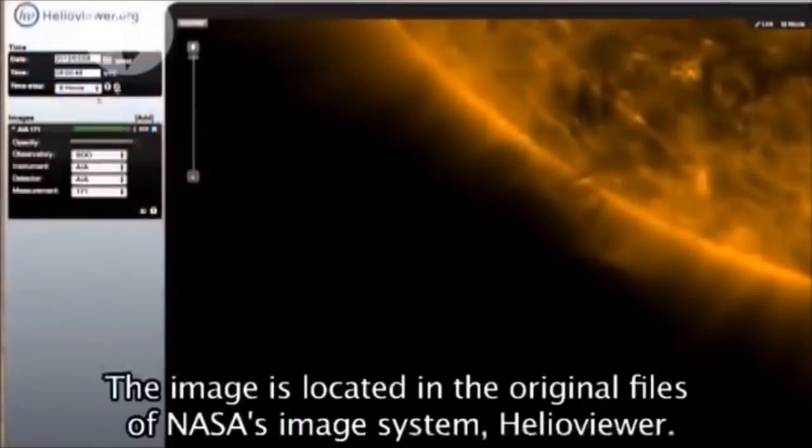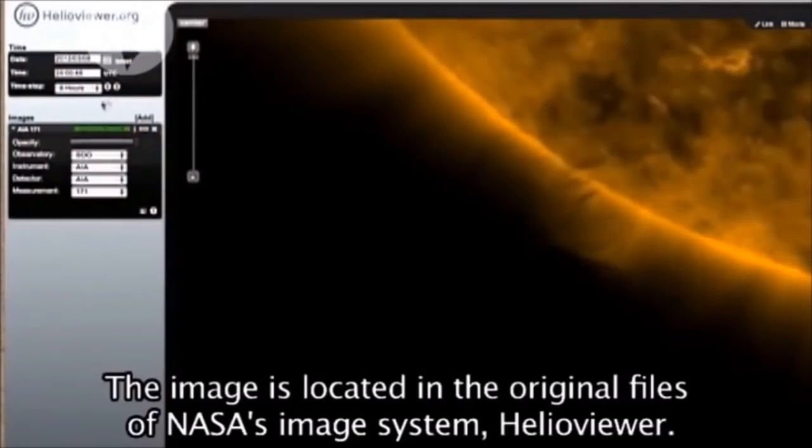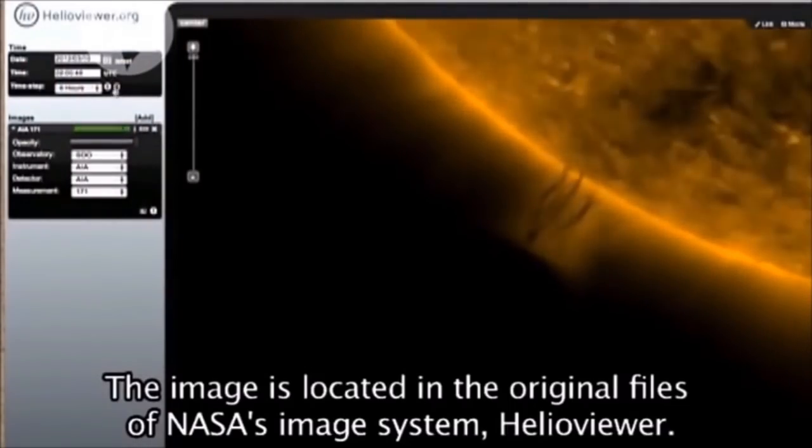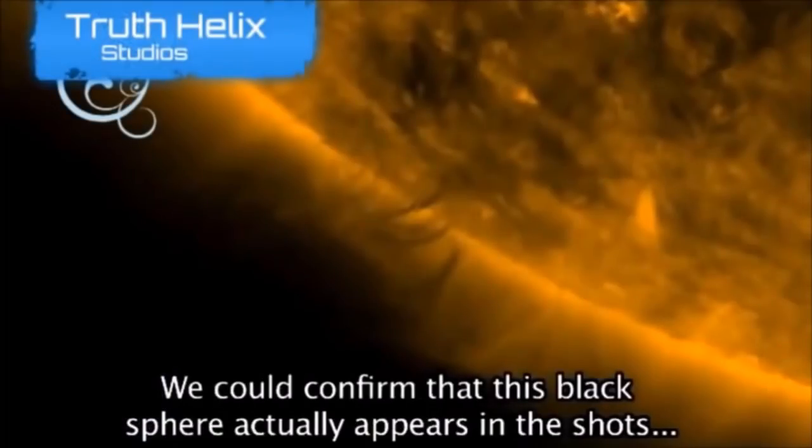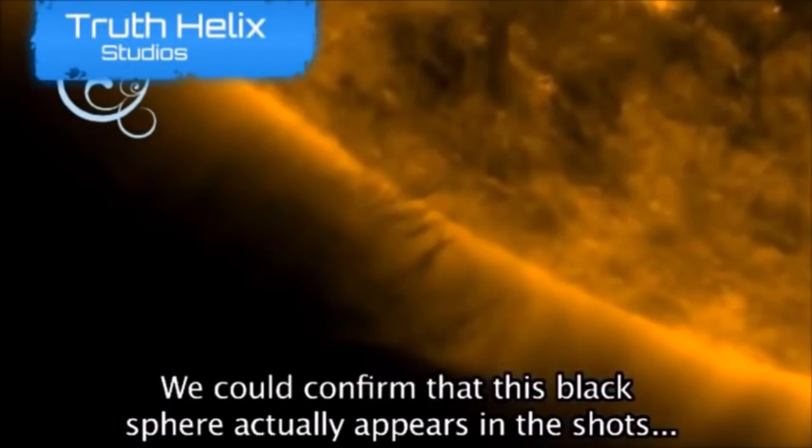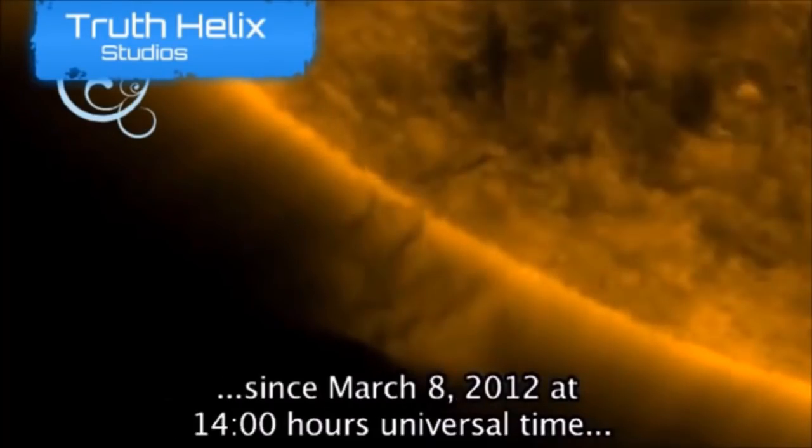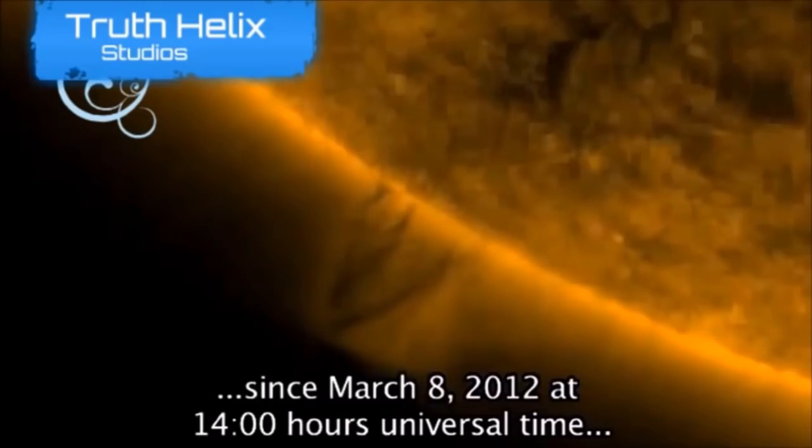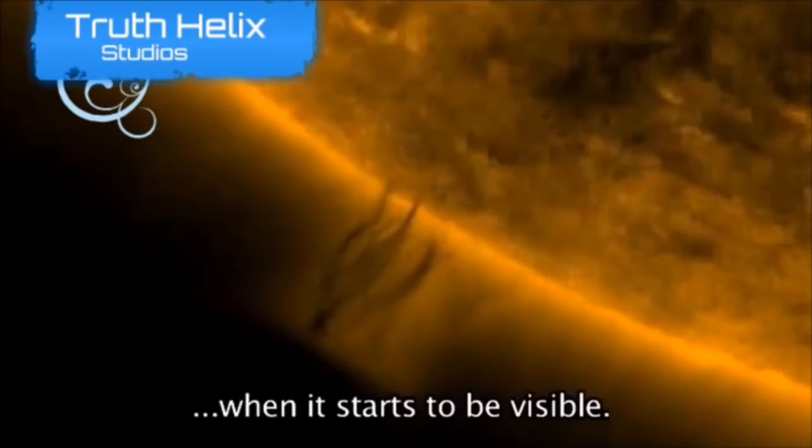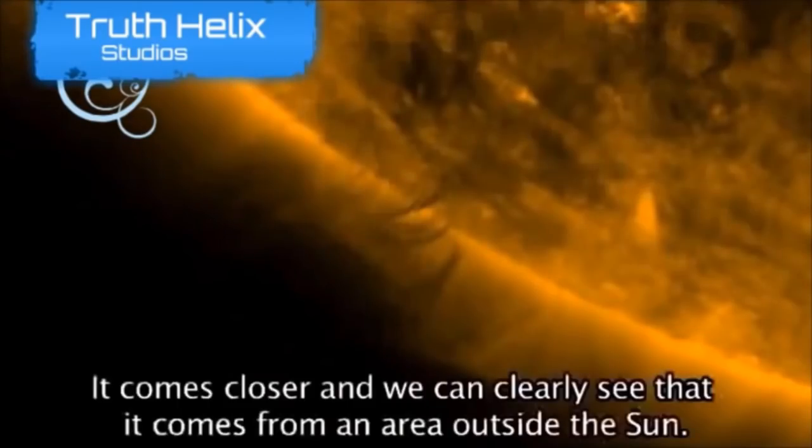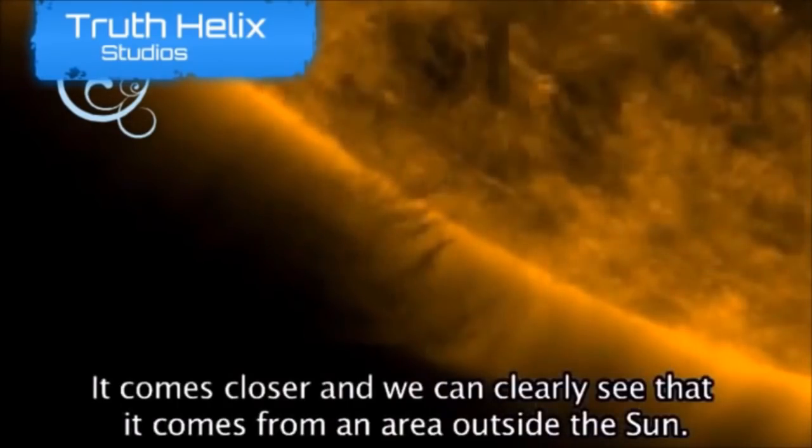The image is located in the original files of NASA's image system Helio Viewer. We could confirm that this black sphere actually appears in the shots since March 8th, 2012 at 1400 hours universal time when it starts to be visible. It comes closer and we can clearly see that it comes from an area outside the Sun.